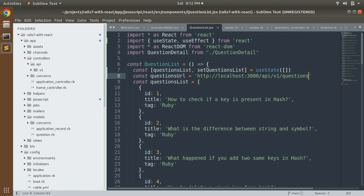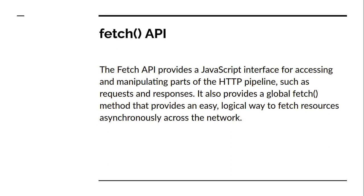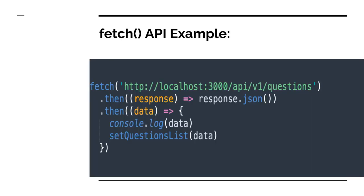Now we will call the fetch API to get the data from the Rails API endpoint. But before calling the fetch API, let's discuss a bit about how it works. The fetch API provides a JavaScript interface for accessing and manipulating parts of the HTTP pipeline such as requests and responses. It also provides a global fetch method that provides an easy, logical way to fetch resources asynchronously across the network. In this fetch API, we will set the questionList state with the API response we get.